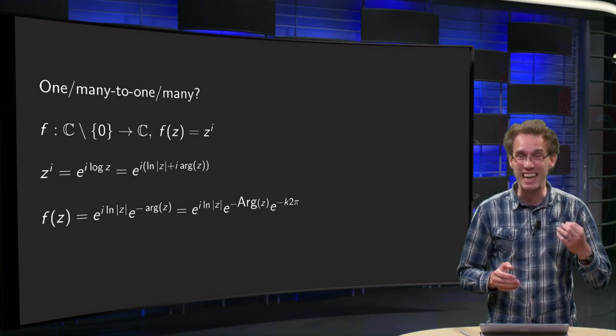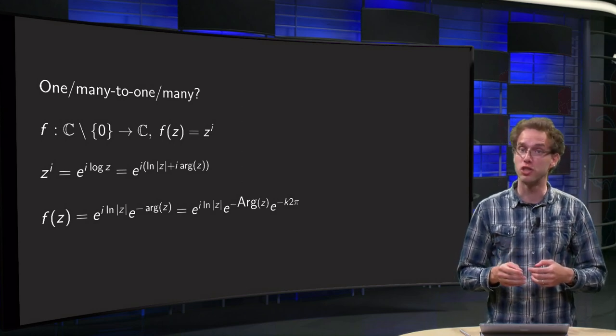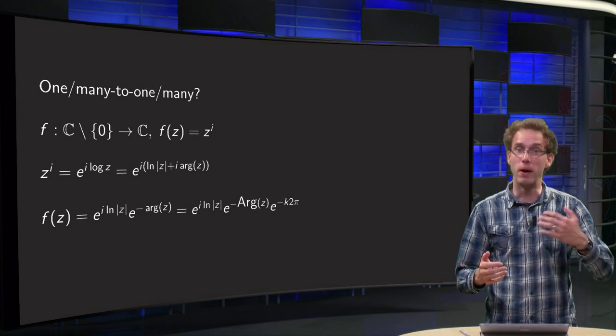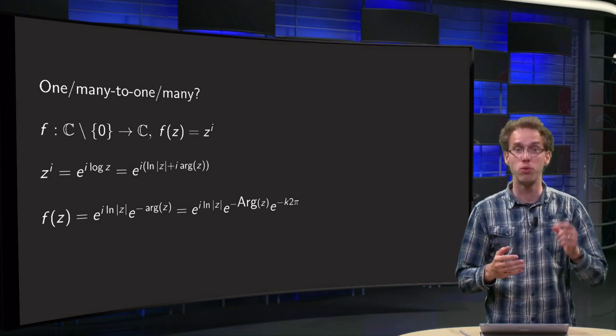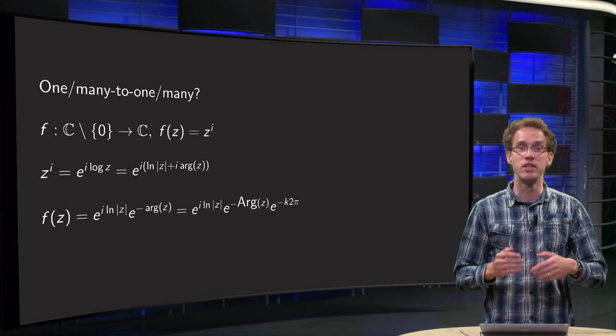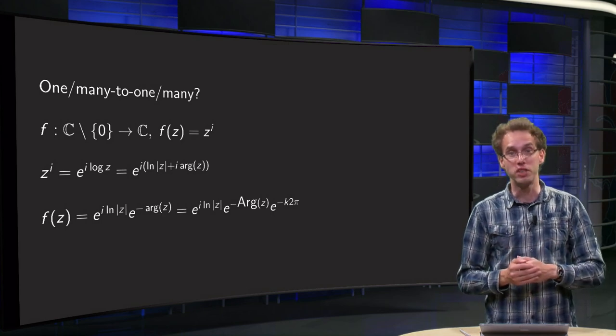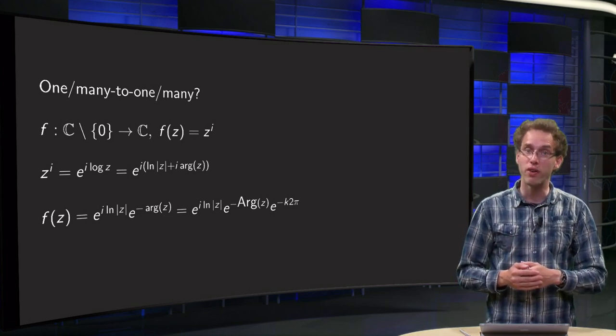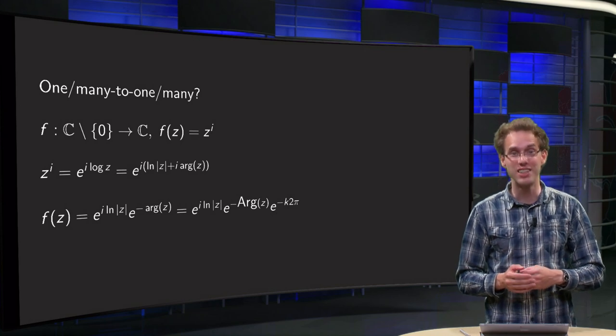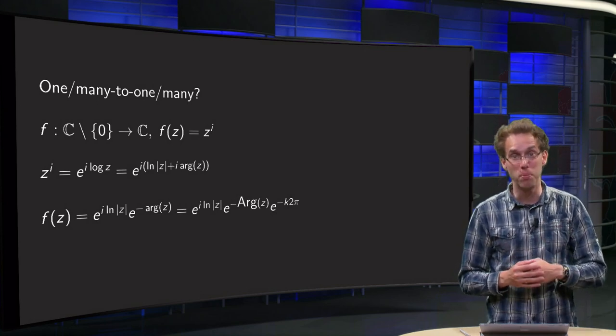In complex analysis it is even worse, because functions can also be 1-to-many or many-to-many, not just 1-to-1 or many-to-1. So how can we determine which case we have? We will have to use the definitions directly as you will learn in the example in this video.